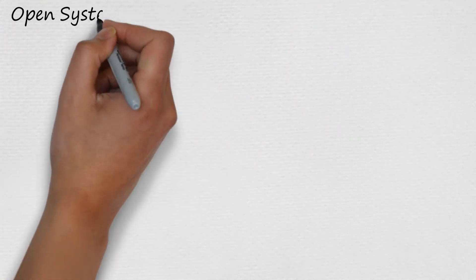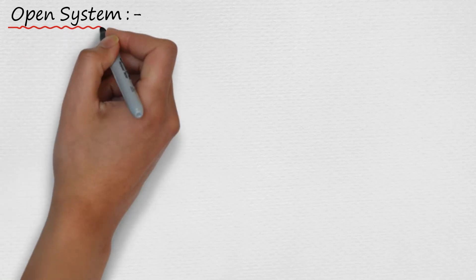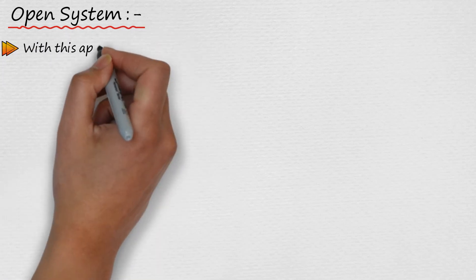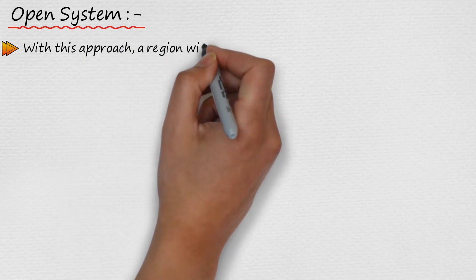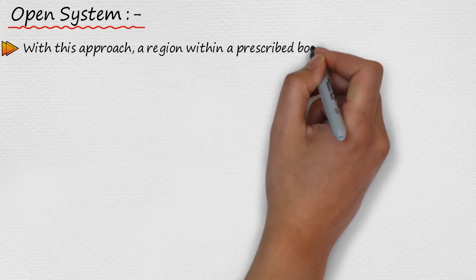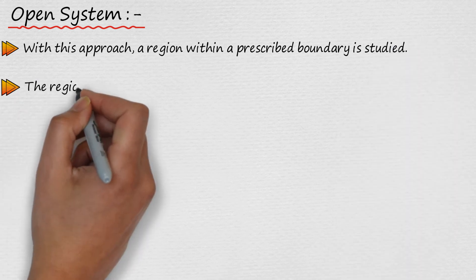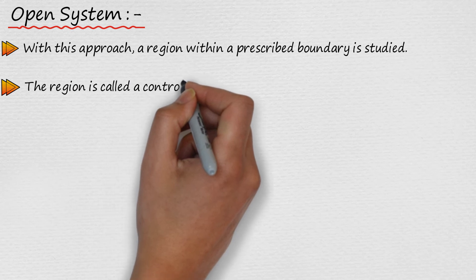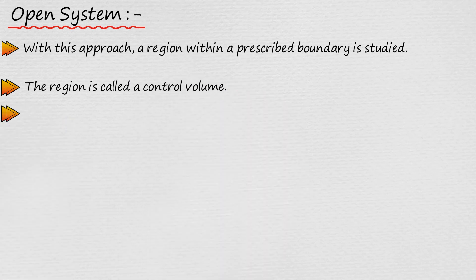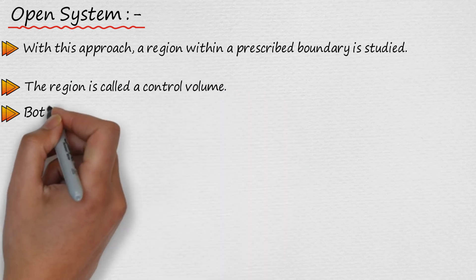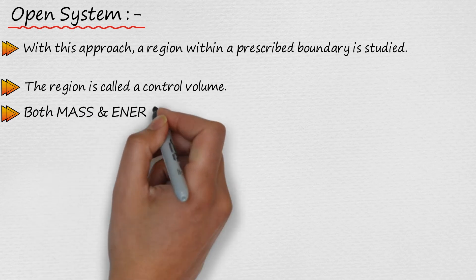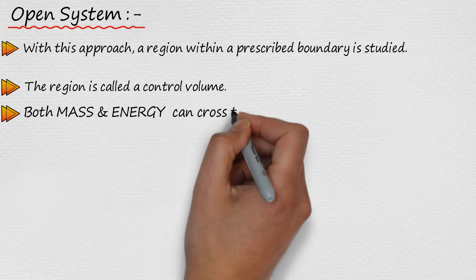Another type system is open system. With this approach, a region within a prescribed boundary is studied. This region is called control volume. Both mass and energy can cross boundary of a control volume.